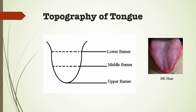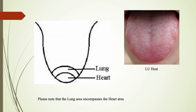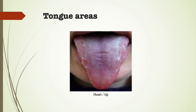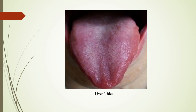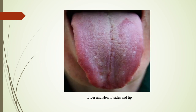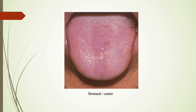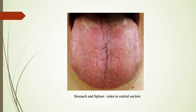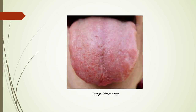In this model, the tongue is divided into three zones, each representing one of the three jiao. The upper jiao can be seen in the front third of the tongue; the posterior third of the tongue is the lower jiao, and in between them is the middle jiao. The tip of the tongue reflects the heart, and the area behind the tip reflects the lung. The sides represent the liver. The center is the stomach and spleen. The lungs are in the front third.